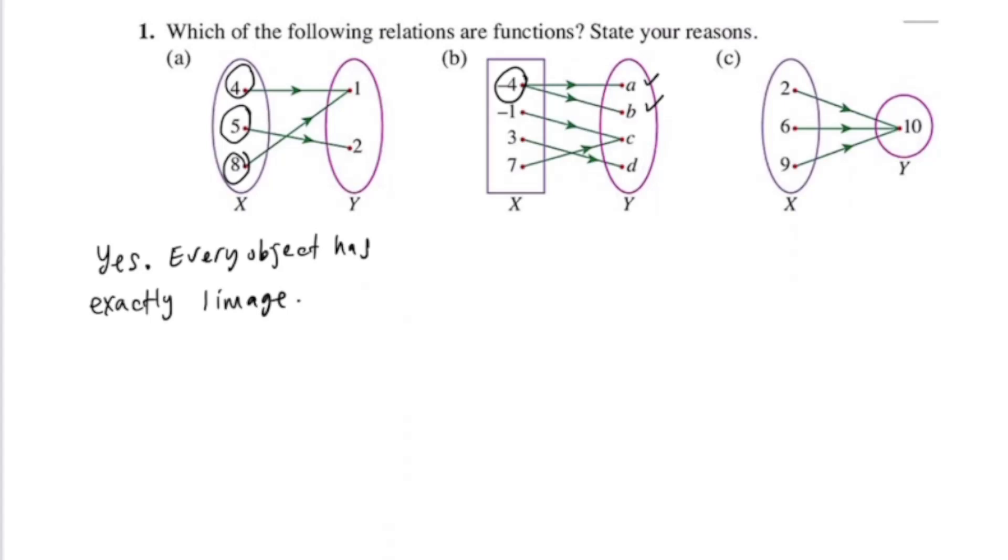Every object must have exactly one image. Negative 1 has one image, 3 has one image, 7 has one image, but we know it's not a function. Why? Because negative 4 has two images.